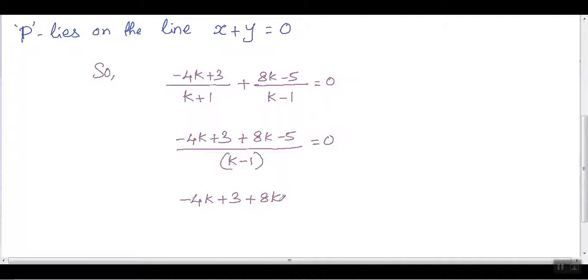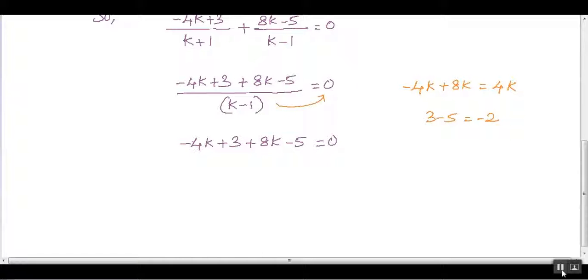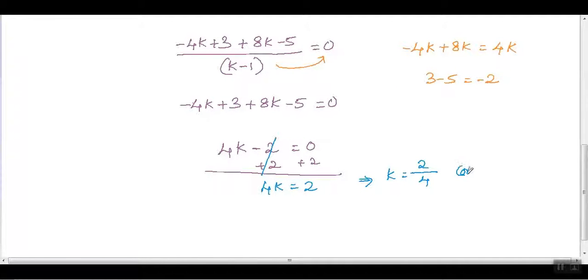Now simplify this: -4k plus 8k becomes 4k, and 3 minus 5 becomes -2, so we get 4k - 2 equals zero. Move -2 to the right-hand side to get 4k equals 2. Divide both sides by 4, and we get k equals 2/4, which simplifies to k equals 1/2.